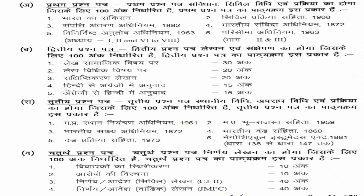तीसरा paper भी 100 marks का होता है, जिसमें MP Accommodation, MP LRC, Evidence, IPC, CRPC, और Negotiable Instruments आते हैं। चौथा paper भी 100 marks का होता है, जिसमें framing और drafting करनी पड़ती है। Framing of the issues और framing of the charge दोनों 10-10 marks के हैं। Judgment writing में civil का 40 marks और criminal का 40 marks — कुल 80 marks, plus 10-10 marks अन्य, total 100 marks।